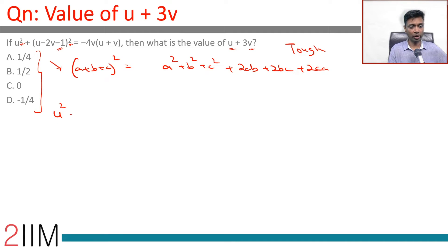The left hand side is u square plus u square plus 4v square plus 1, u into minus 2v is minus 2uv so minus 4uv.